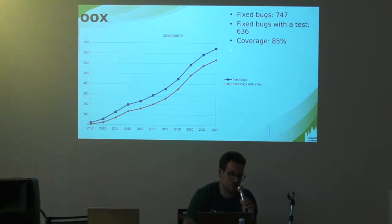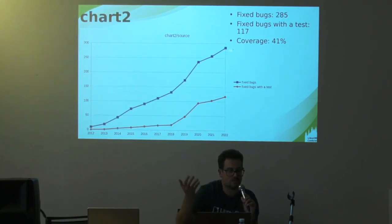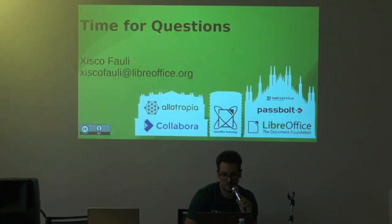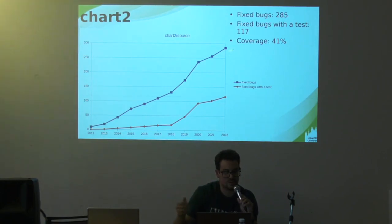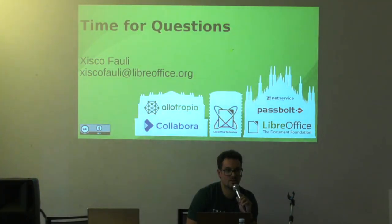The philosophy in those well-covered modules was always to have a unit test, maybe because it's easier to do so there. For Writer filter we have 92% coverage. Some modules are getting better since 2018 but are still at 41%. Those were just some examples — I didn't want to go through all the folders in LibreOffice. Thank you very much — any questions?